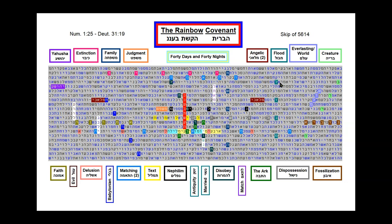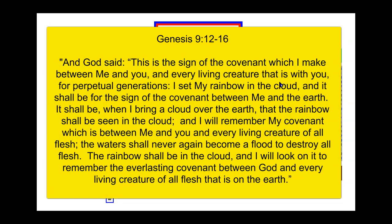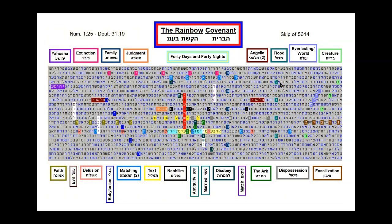In Hebrew, the rainbow is translated as 'bow in the clouds.' Genesis chapter 9 verses 12 to 16 says, 'This is the sign of the covenant which I make between me and you and every living creature that is with you for perpetual generations. I set my rainbow in the cloud, and it shall be for the sign of the covenant between me and the earth. It shall be when I bring a cloud over the earth that the rainbow shall be seen in the cloud, and I will remember my covenant which is between me and you and every living creature of all flesh. The waters shall never again become a flood to destroy all flesh. The rainbow shall be in the cloud, and I will look on it to remember the everlasting covenant between God and every living creature of all flesh that is on the earth.'